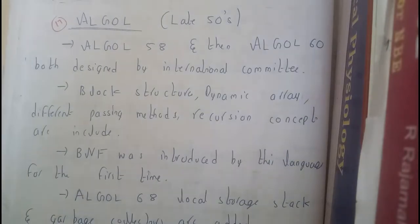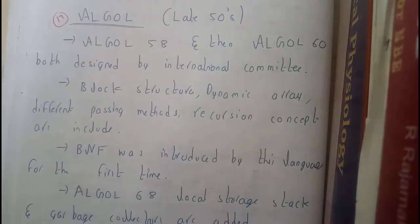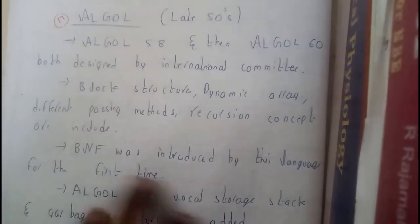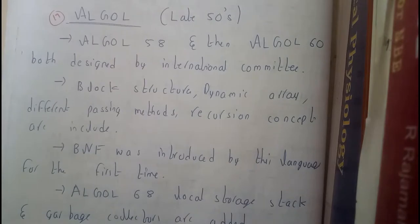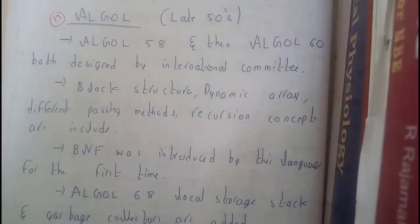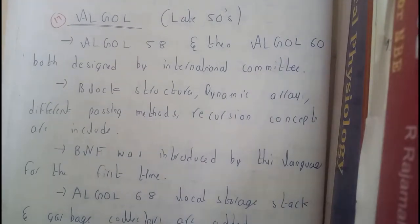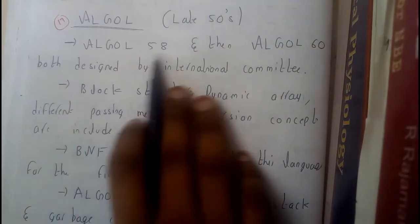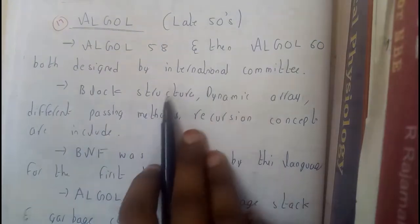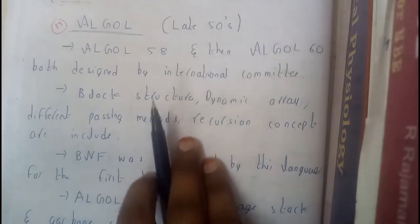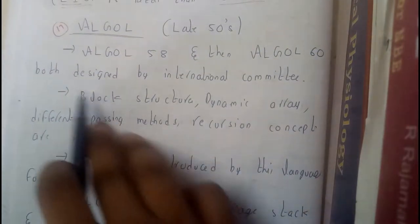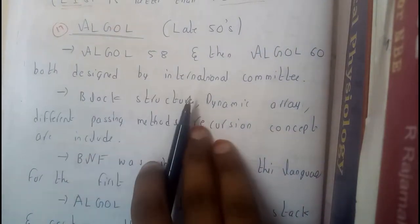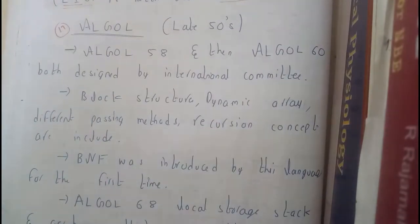Hello guys, we are back with our next tutorial. In this tutorial let us learn about ALGOL. It was discovered in the late 1950s — ALGOL 58 and then ALGOL 60, those are the versions. Both were designed by international committees.